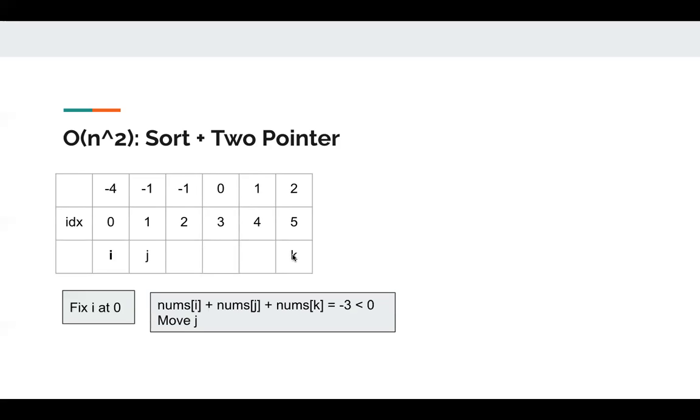Now nums[i] + nums[j] + nums[k] is negative three, which is smaller than zero. So we need to move j to make the sum bigger, greater, right? As long as it's still smaller than zero, we need to move j.